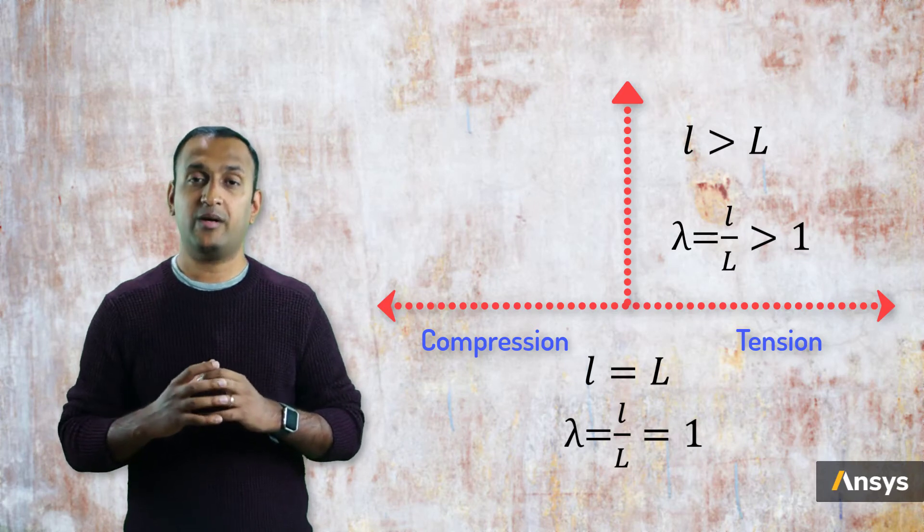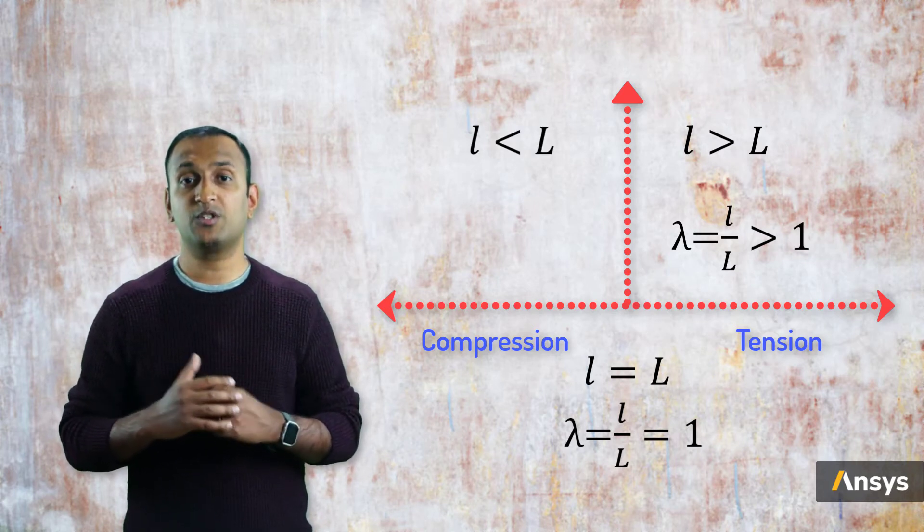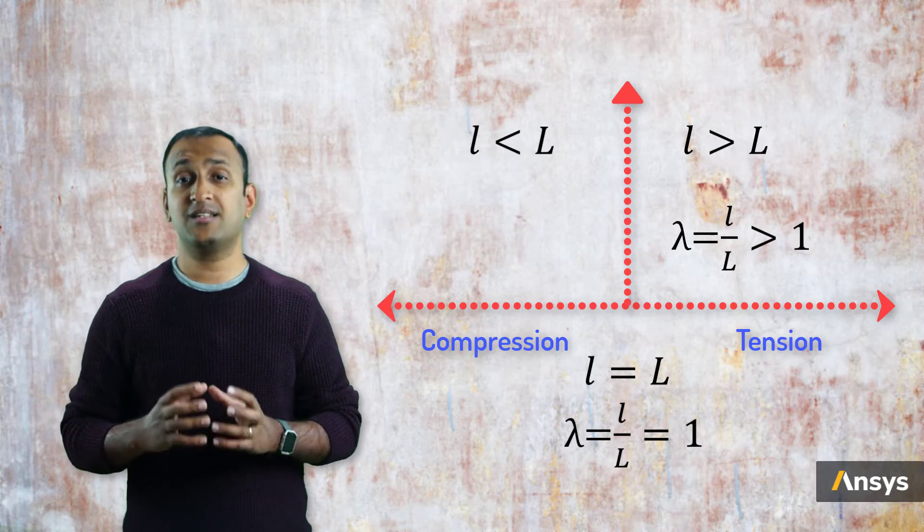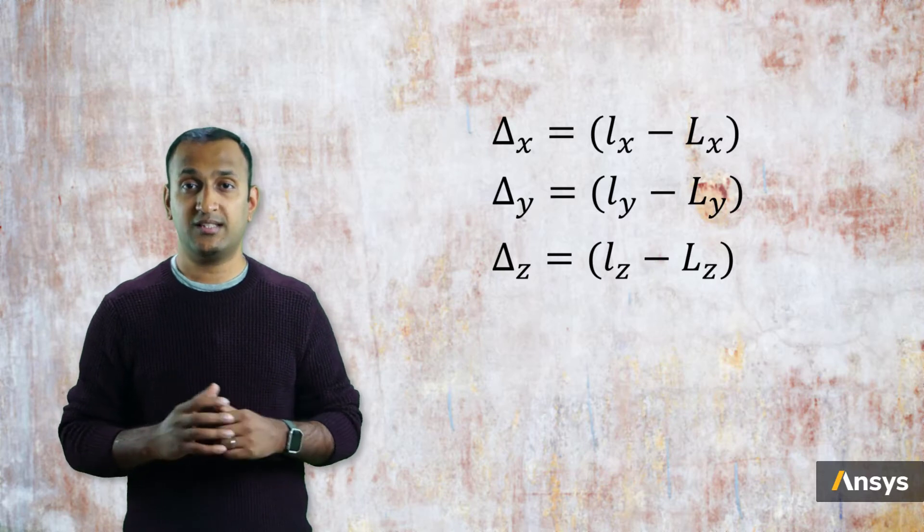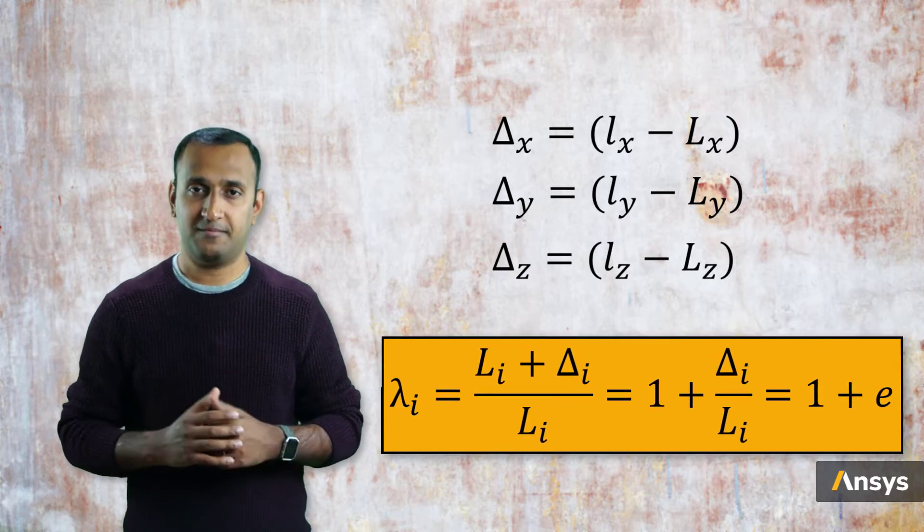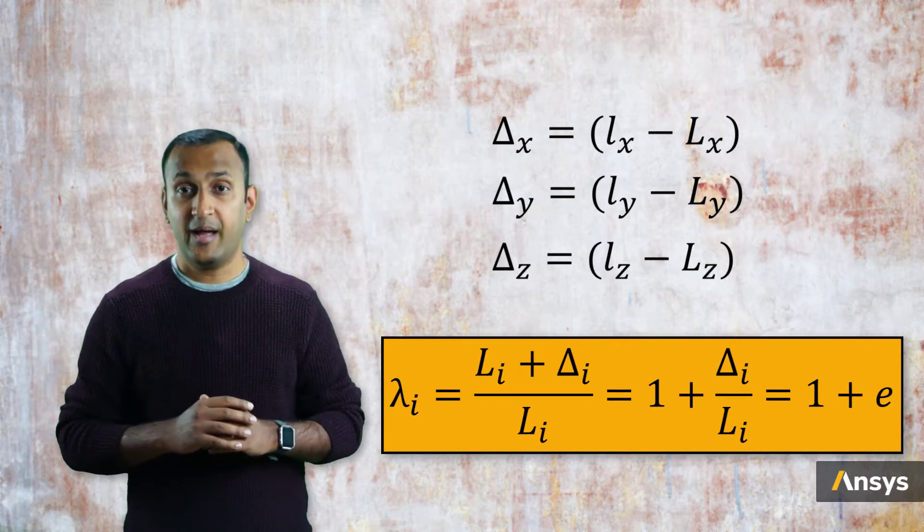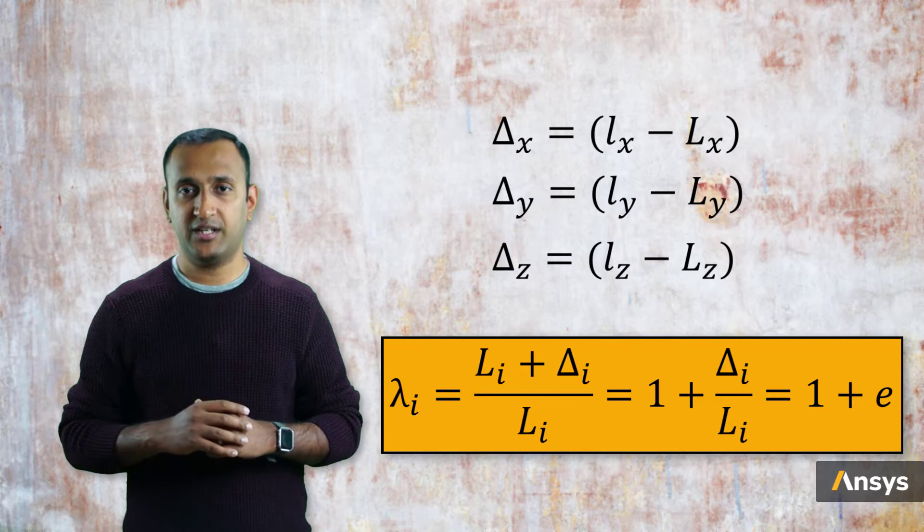Similarly, when a part is compressed in one direction, its final length is going to be smaller than its initial length, and hence the stretch ratio is less than one. And since these stretches are defined in the principal directions, there are no shear deformations in this direction. If we measure the changes in the dimensions in the three directions as delta x, delta y, and delta z, then we can write them in this form. Simplifying it shows us that stretch is nothing but one plus engineering strain. This way, one can relate any type of mode of deformation in the form of principal stretches and use them as a way of representing the strain tensor.